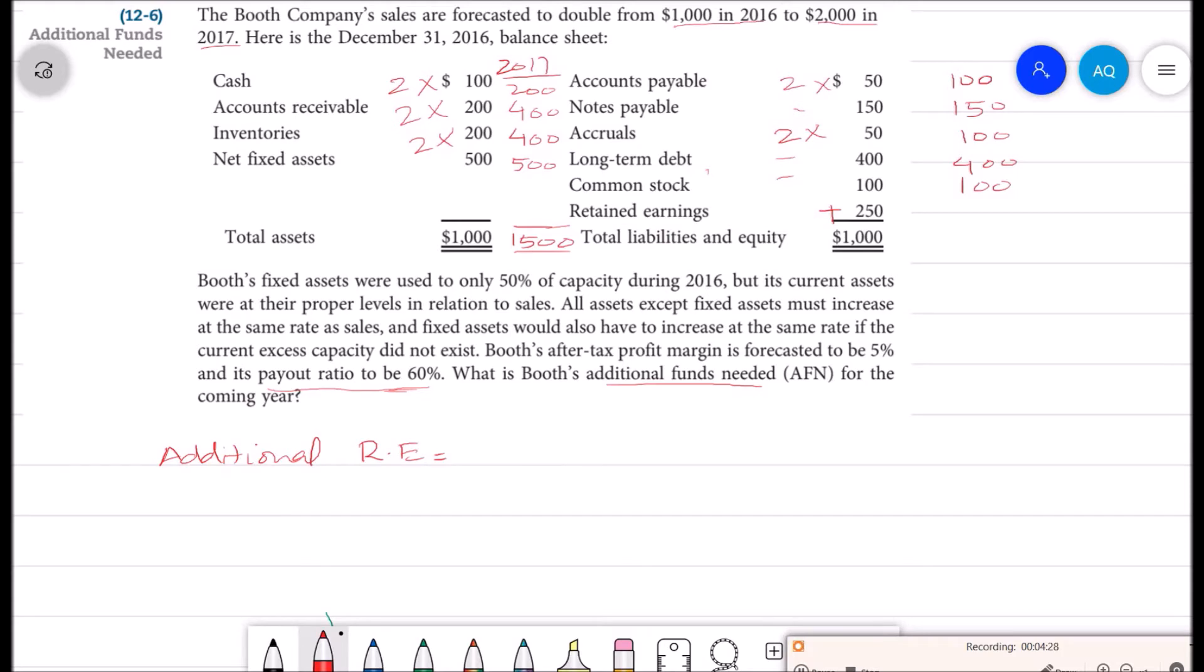Our profit margin is 5%. So if we multiply our profit margin with our new sales, we can get the addition into our income, and then we will be paying out some money out of this additional income. So our profit margin is 5%, new sales are $2,000, and our payout ratio is 60%. So $40 will be added to our retained earnings. Our previous retained earnings was $250, so new retained earnings will be $290.